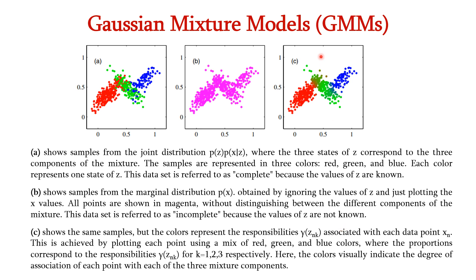In plot C, the posterior probability is shown. The colors represent the responsibilities gamma(z_nk) associated with each data point, plotted as a mix of red, green, and blue where proportions correspond to gamma(z_nk) for k=1 to 3. Points clearly in one cluster appear in that cluster's color, but in overlapping regions the colors mix — for instance, a mix of red and green where cluster 1 and cluster 2 overlap, or blue and green where cluster 2 and 3 overlap.